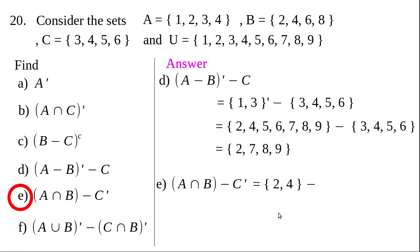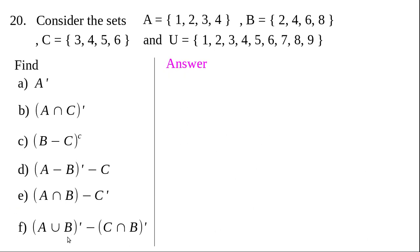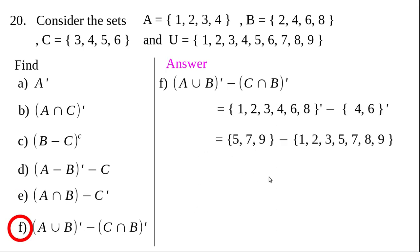For question (e): A intersection (B minus C) dash — {2, 4} minus {3, 4, 5, 6} whole dash — the final answer is {4}. For question (f): (A union B) whole dash minus (C intersection B) whole dash — the final answer is the empty set, because every element in the first set also appears in the second set, so there are no elements exclusively in the first set.